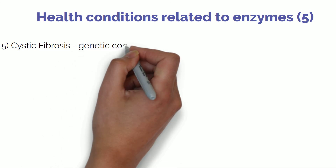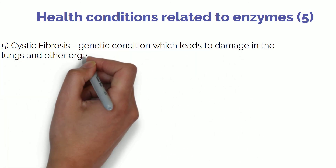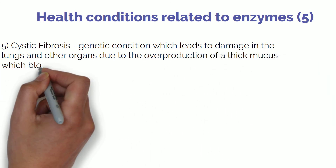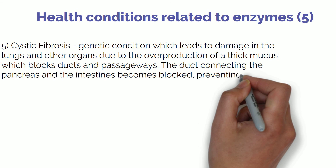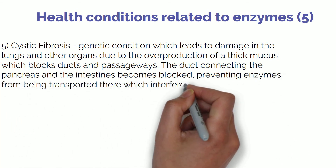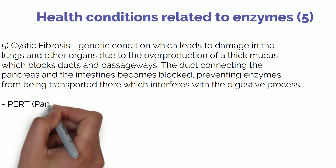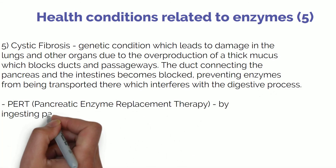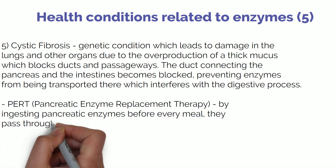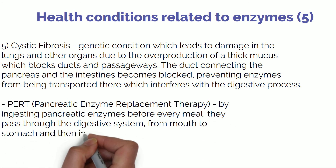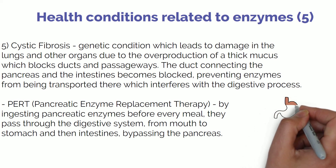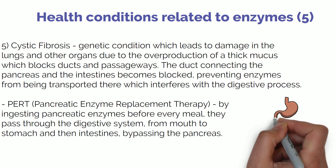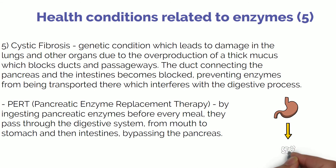Finally, cystic fibrosis is a genetic condition causing damage to the lungs and other organs due to overproduction of a thick mucus that blocks ducts and passageways. In this condition, the duct connecting the pancreas to the small intestine becomes blocked, preventing digestive enzymes from being released from the pancreas and interfering with digestion. A treatment called PERT — pancreatic enzyme replacement therapy — has been used to address this. By ingesting pancreatic enzymes, they pass from mouth to stomach and directly into the intestines, bypassing the blocked pancreatic duct. Patients must ingest these enzymes before every meal to allow digestion to take place.